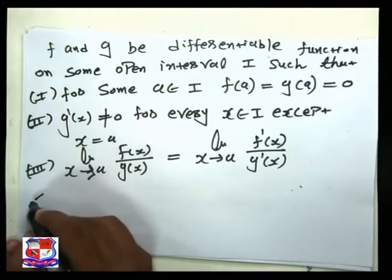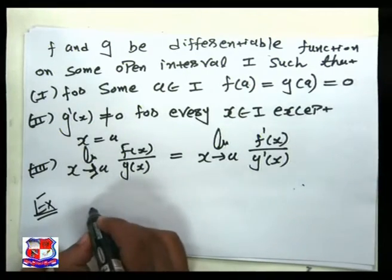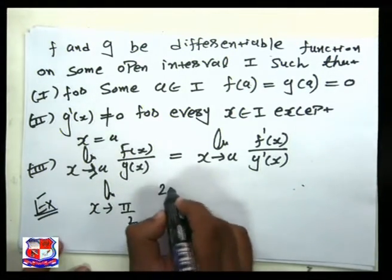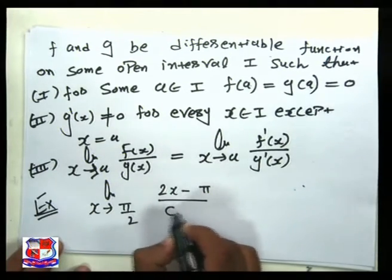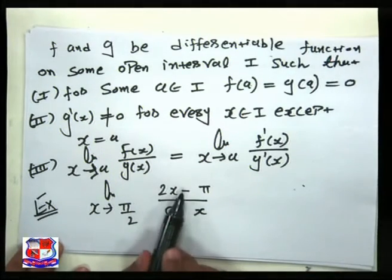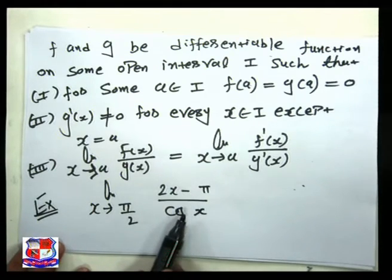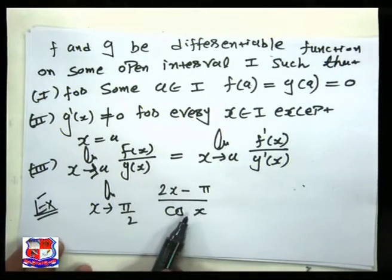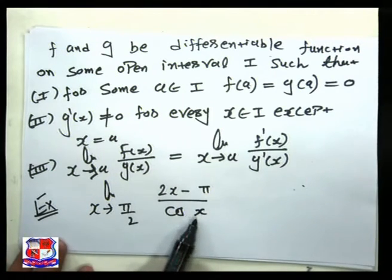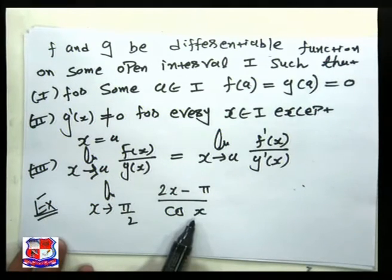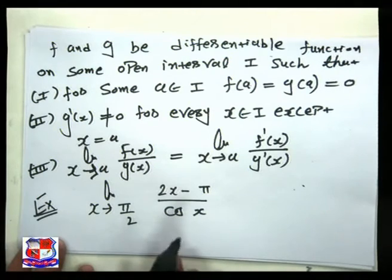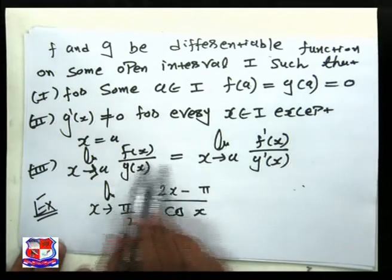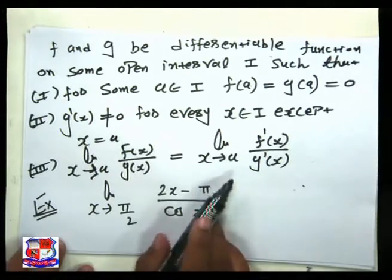Now in our example — the limit as x tends to π/2 of (2x − π)/cos x — this is f(x) and this is g(x). Both are differentiable: one is a polynomial and the other is a trigonometric function. g(x) = cos x, so g'(x) = −sin x, which is not equal to 0 on any interval except at x = a. So all conditions are satisfied and we can apply L'Hôpital's Rule.